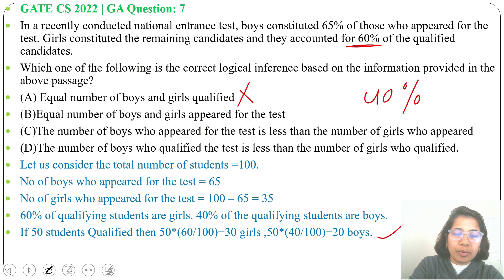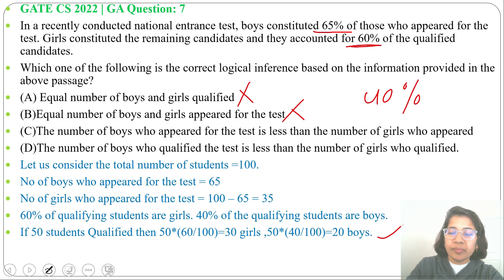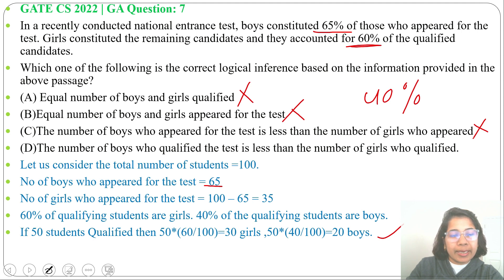Next, option B: equal number of boys and girls appeared for the test — wrong. 65% boys and 35% girls appeared, so it's not equal. Option B is also wrong. Next, option C: the number of boys who appeared for the test is less than the number of girls who appeared — wrong. 65% boys appeared whereas 35% girls appeared, so the number of boys is more than the number of girls who appeared. Option C is also wrong.